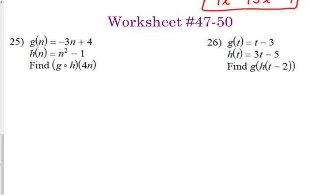Alright, so 25. We start from the inside and work our way out. So 25, g of h of 4n, again, I prefer to write it like this.